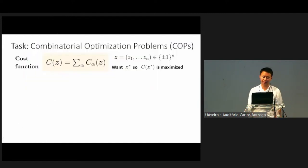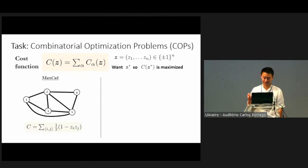This work is concerned with the task of solving combinatorial optimization problems, which I define as follows. You're given a cost function C over m-bit strings, and the goal is to find some bit string Z star such that the cost is maximized. For example, a very commonly discussed combinatorial optimization problem is the max cut problem, where you're given a graph and you want to find a bipartition of vertices so that the number of edges between them is maximized. The cost function can be written as a sum over edges, where each term contributes zero if the two bits agree, and one if they disagree.